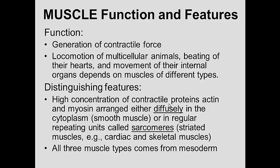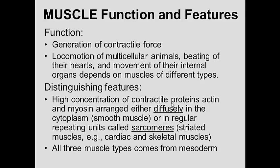Actin and myosin are sometimes arranged diffusely, as in smooth muscle, and other times they're arranged in sarcomeres. The sarcomere is the functional unit of striated muscle. All three types of muscle — cardiac, skeletal, as well as smooth muscle — come from the mesoderm.